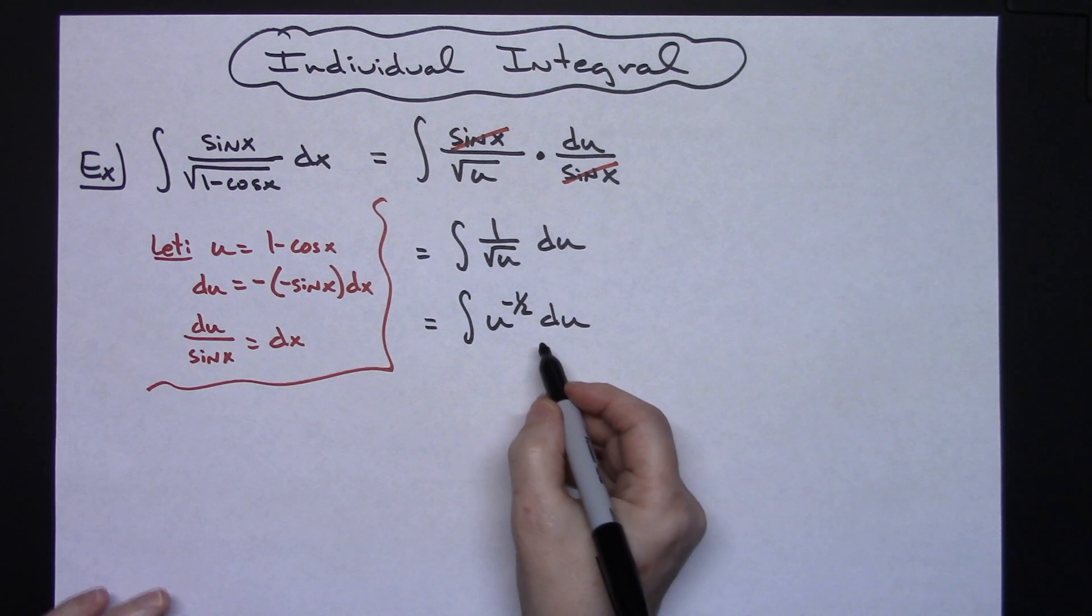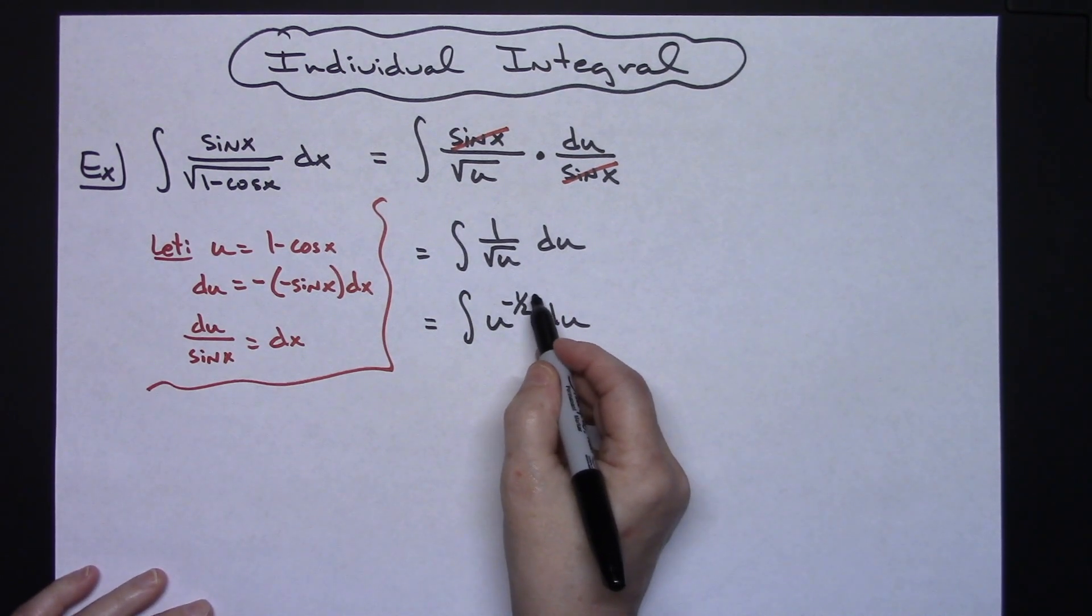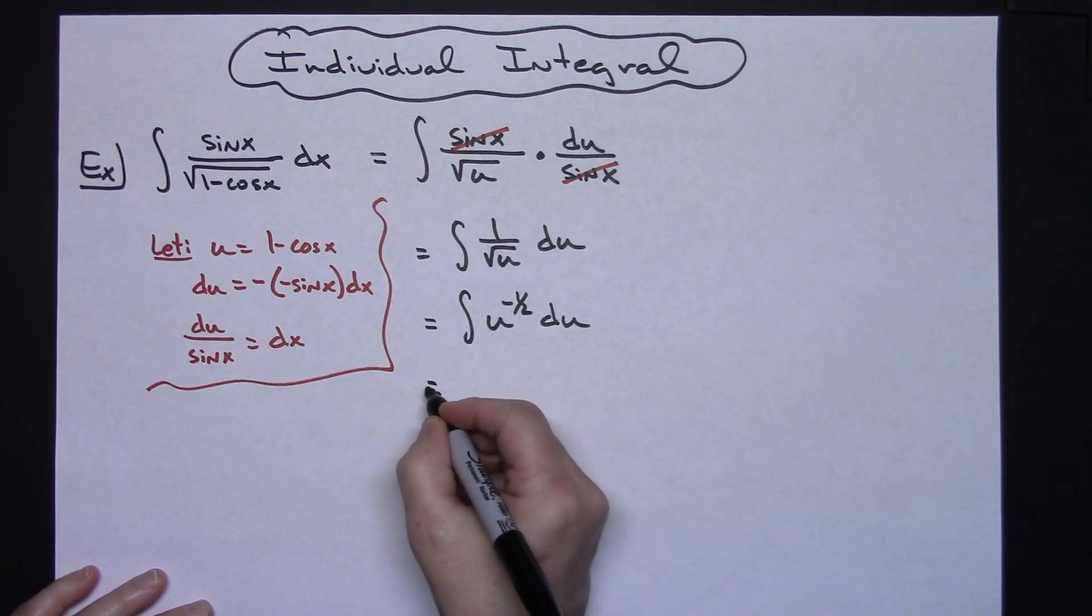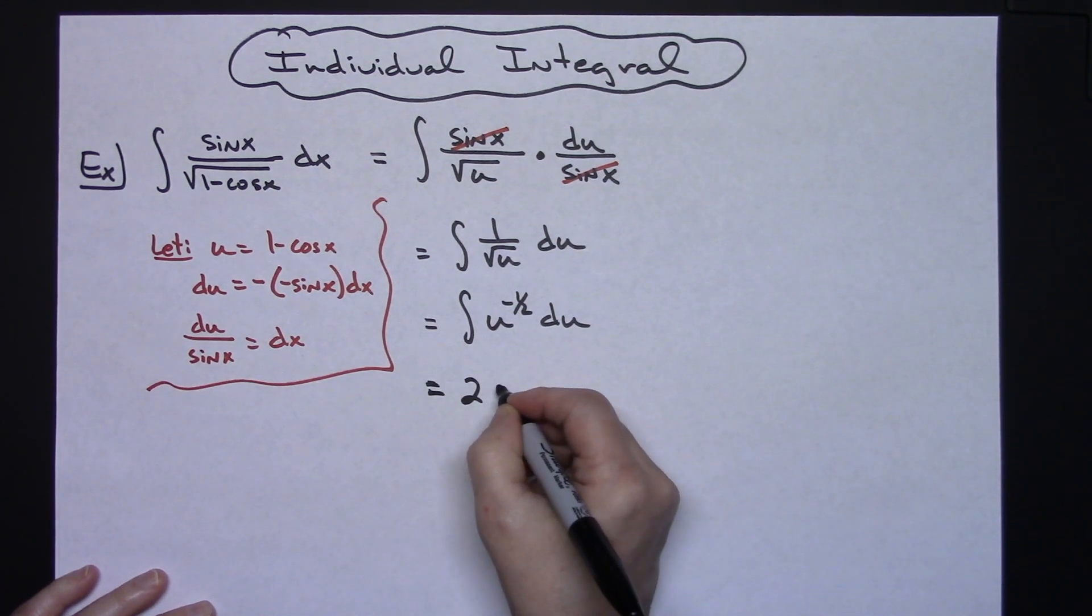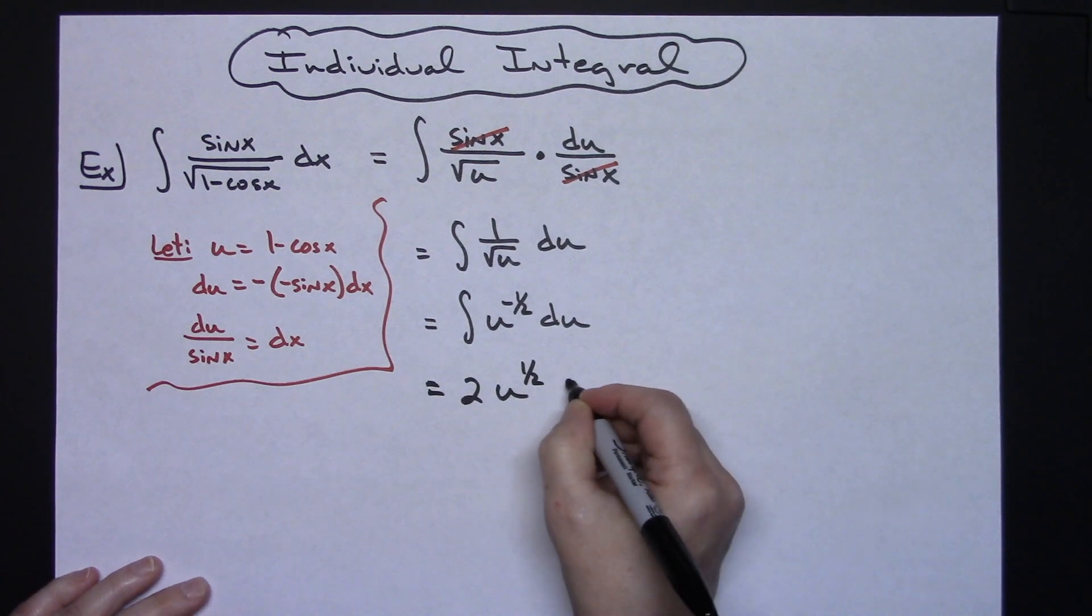Now it is to a place where I can integrate this. Integrating by adding one there would give me a one half. So in front one over one half will give me a two u to the one half plus c.